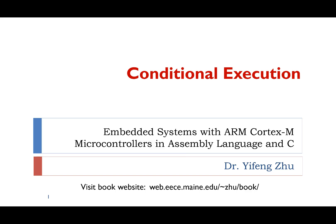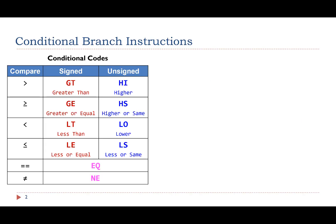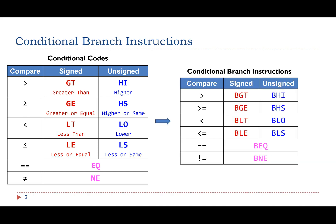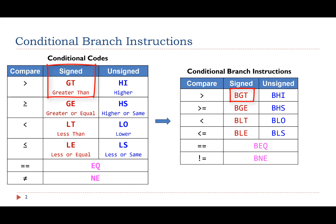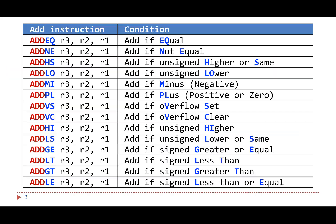This video will talk about ARM Cortex-M conditionally executed instructions. In the previous video on conditional branch instructions, we mentioned that if we add a B before these conditional codes, we can obtain conditional branch instructions. For example, BGT is branch if signed greater than, BHI is branch if unsigned greater than. In Thumb-2, these conditional codes can be appended to other instructions.